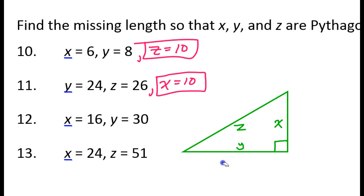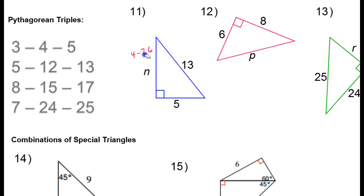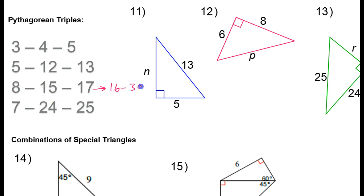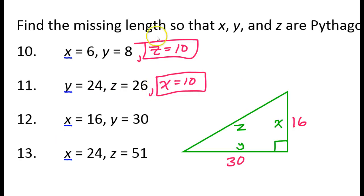What about the next one? 16 and 30 — x is 16 and y is 30. I don't see those numbers directly, but if I double the 8-15-17 triple, I would get: doubling 8 gives 16, doubling 15 gives 30, and doubling 17 gives 34. So I have my 16 and 30, and the other one must be 34. So Z must equal 34.